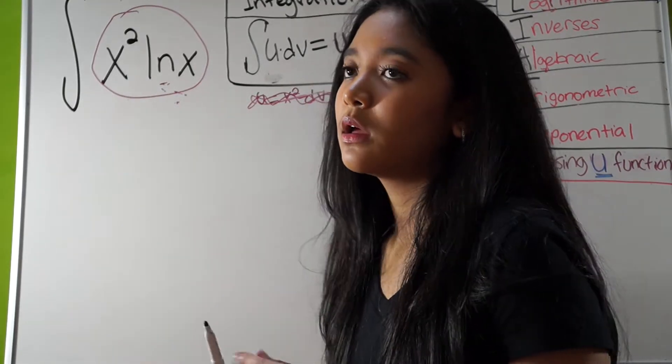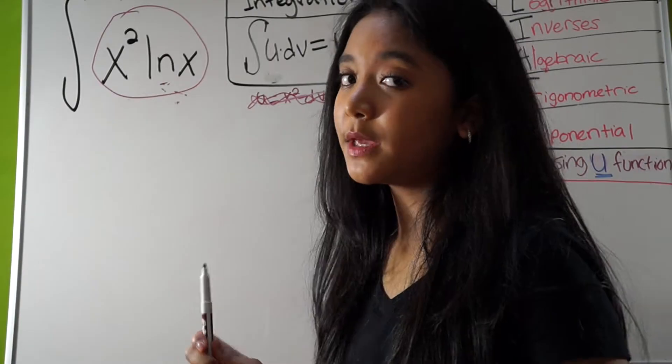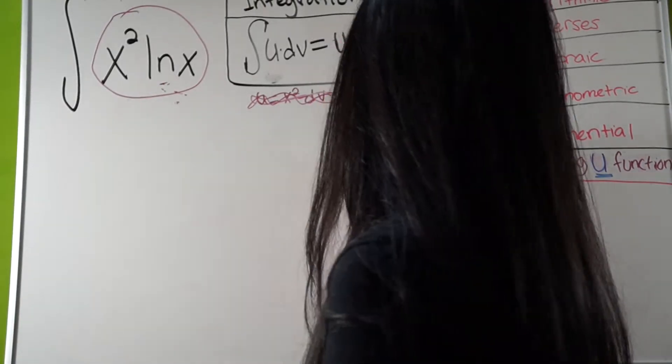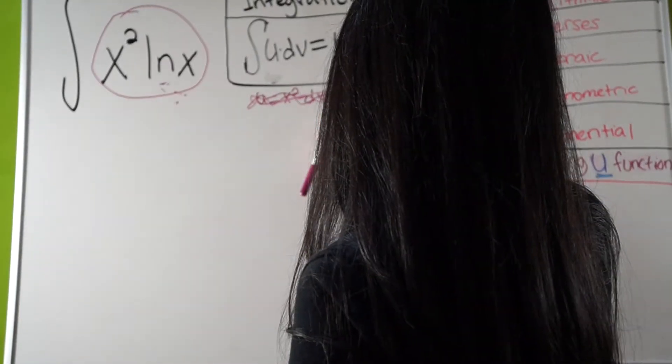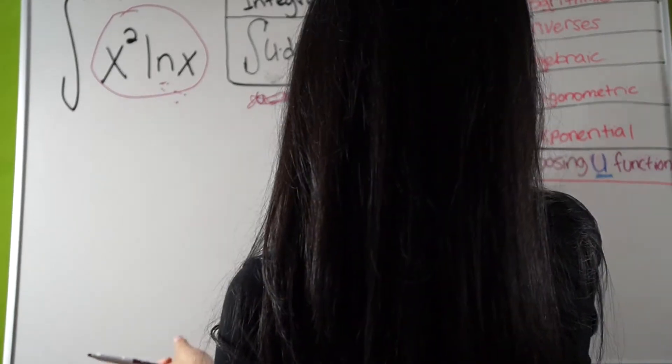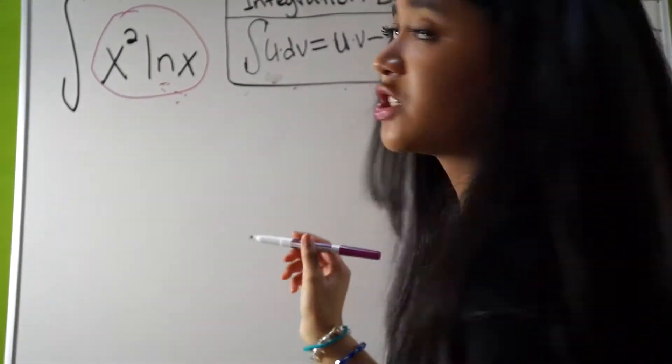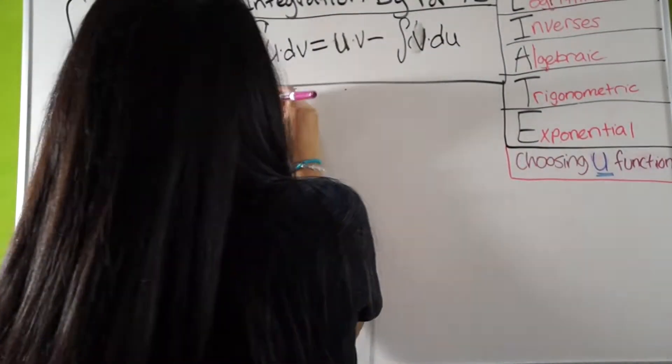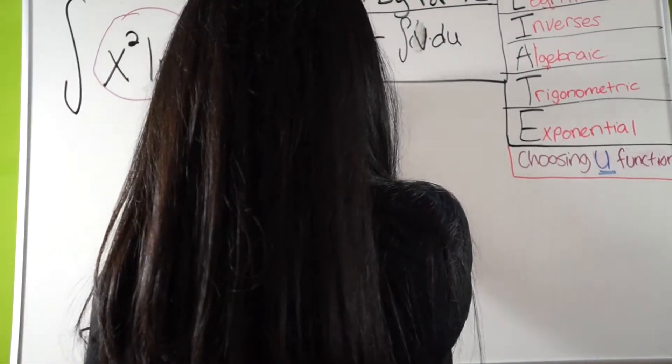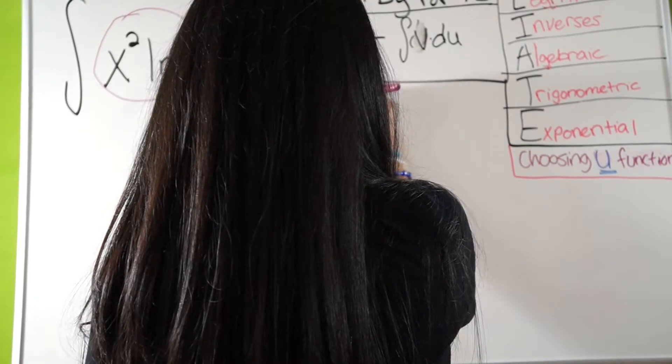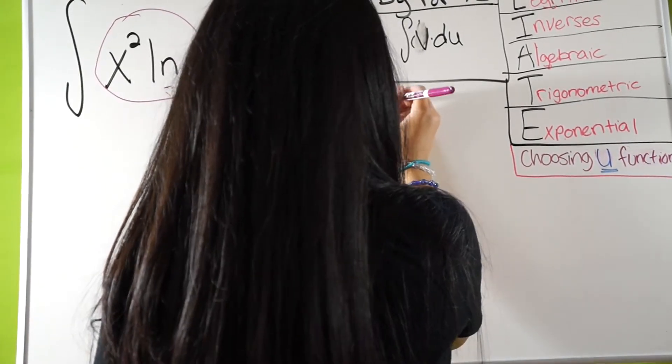This is two terms, so don't automatically think that your u is x squared and your dv is ln x, because it's not. What your u should actually be is ln x, and your dv should actually be x squared.